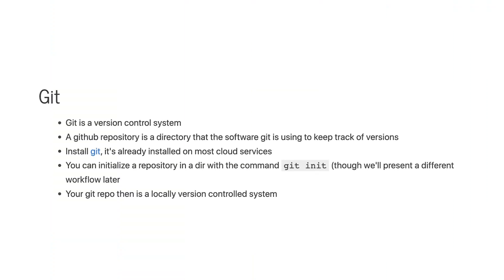A Git repository is a directory that the software Git is using to keep track of versions. We use version control because one of your biggest enemies is yourself from six months ago, or two years ago. That person is really inconsiderate — they don't document their code, they don't leave you breadcrumbs to get back to important points. Version control systems automate this to make yourself from six months ago your best friend.